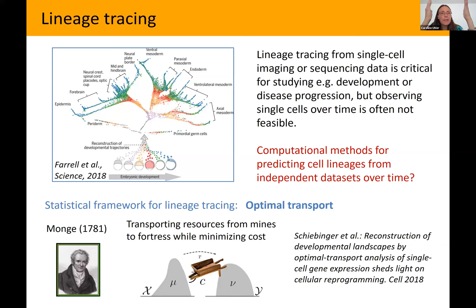To define a transport map you need distances. For microscopy images, pixel one in one image has nothing to do with pixel one in another — cells can be in all kinds of orientations, larger, smaller, etc. Unlike RNA-seq where gene one is gene one across cells, you really cannot take distances between pixels. You need to figure out how images correspond to each other — and using autoencoders, you can find a joint latent space, a joint coordinate system for all your images.